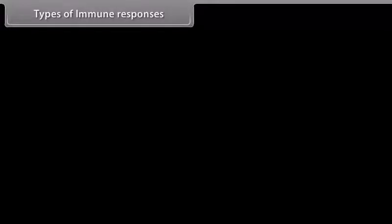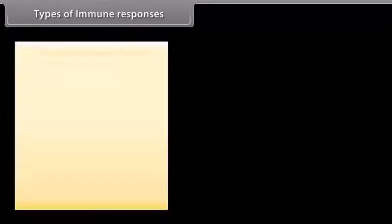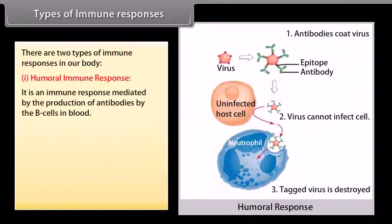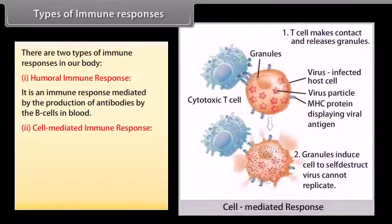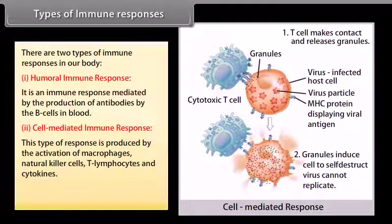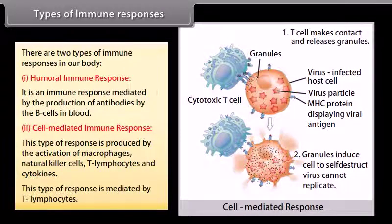There are two types of immune responses in our body. Humoral immune response is an immune response mediated by the production of antibodies by the B-cells in blood. Cell-mediated immune response is produced by the activation of macrophages, natural killer cells, T-lymphocytes, and cytokines, and is mediated by T-lymphocytes.